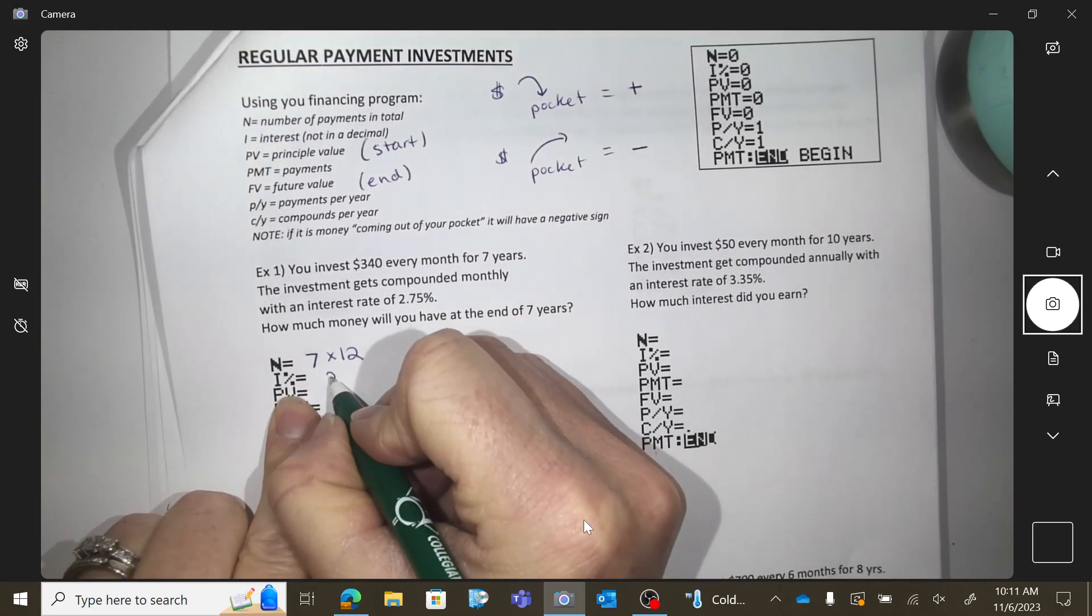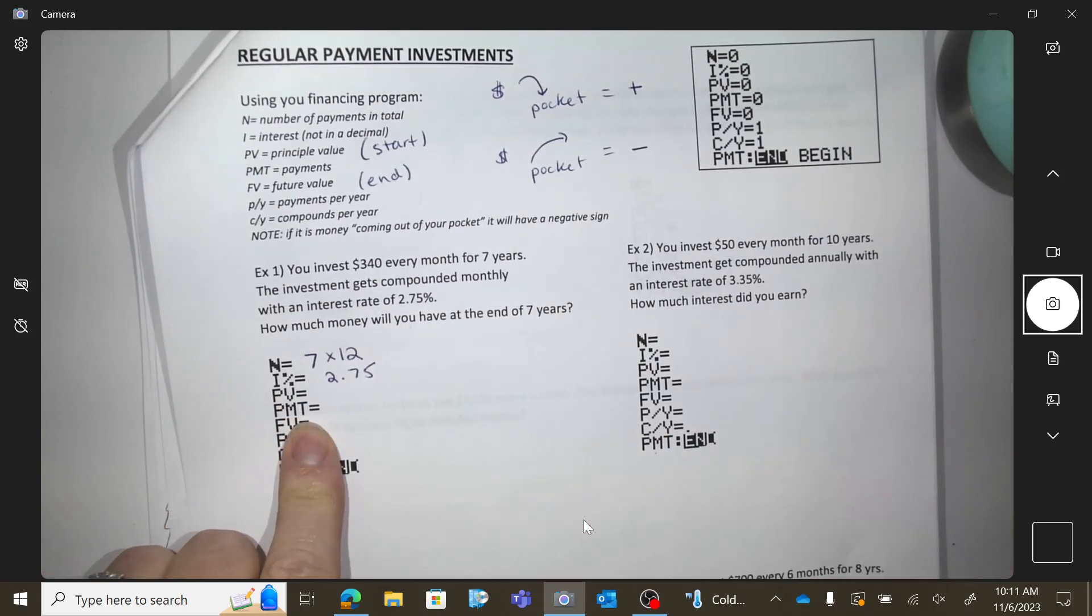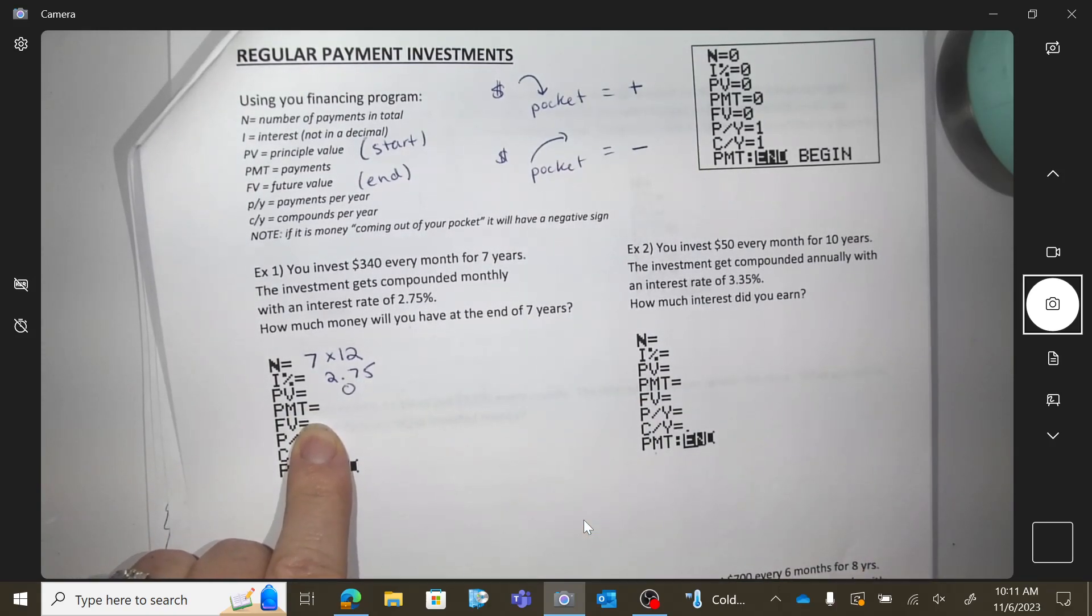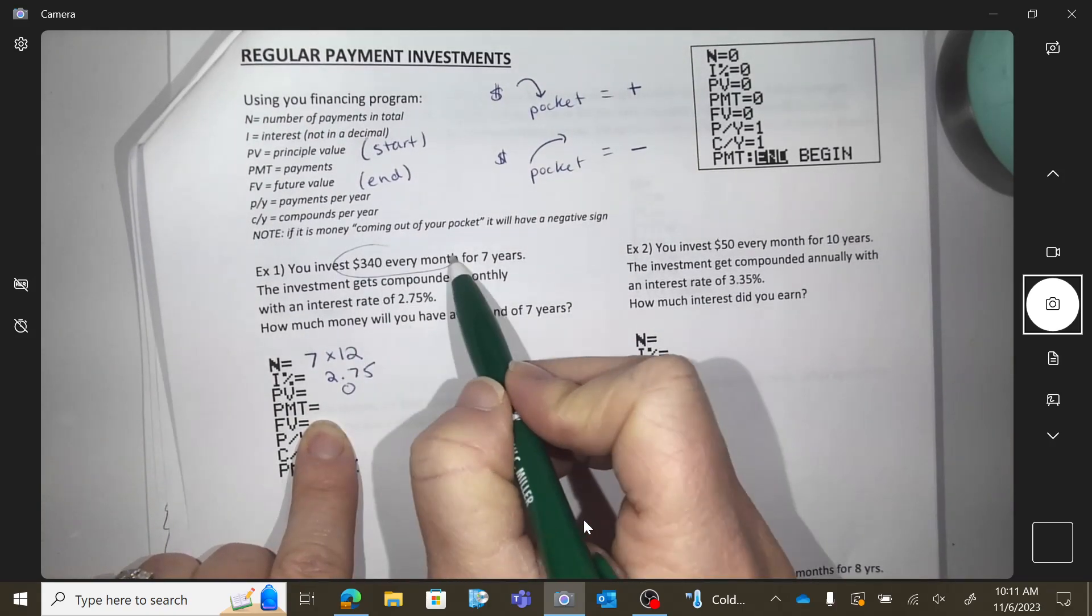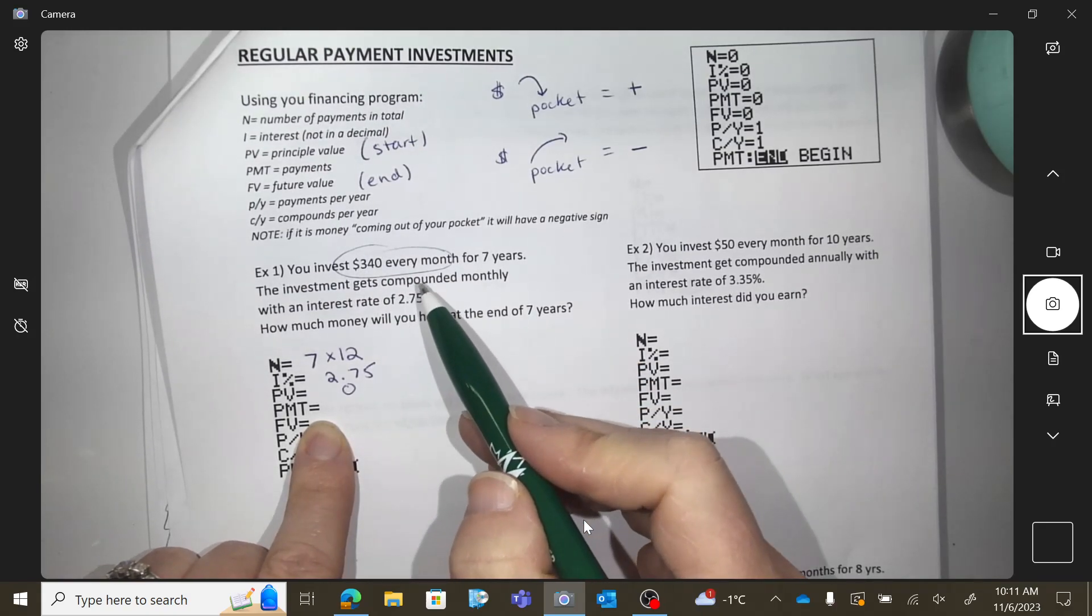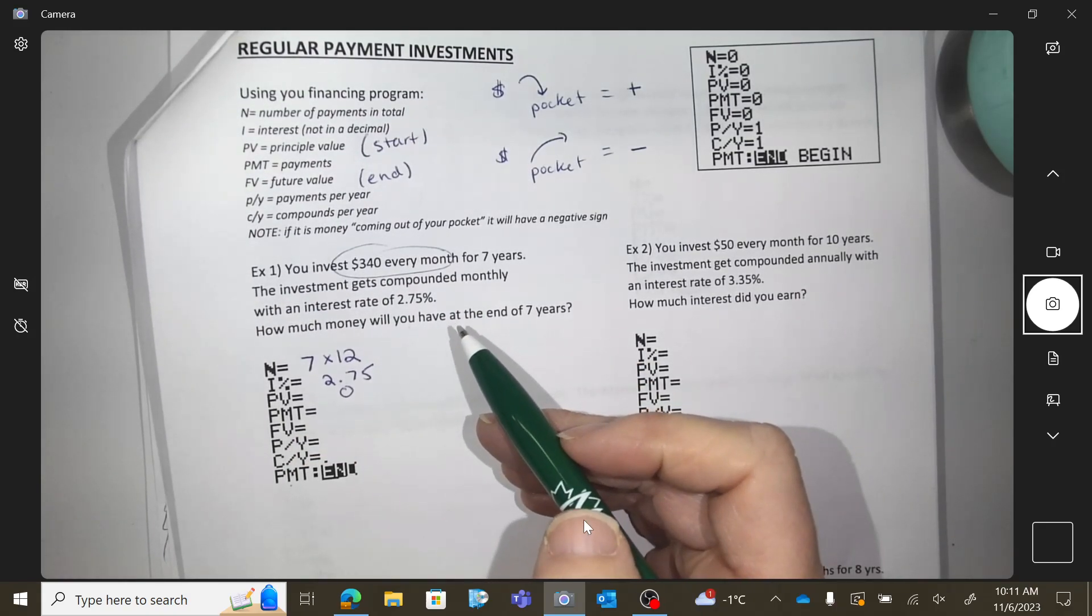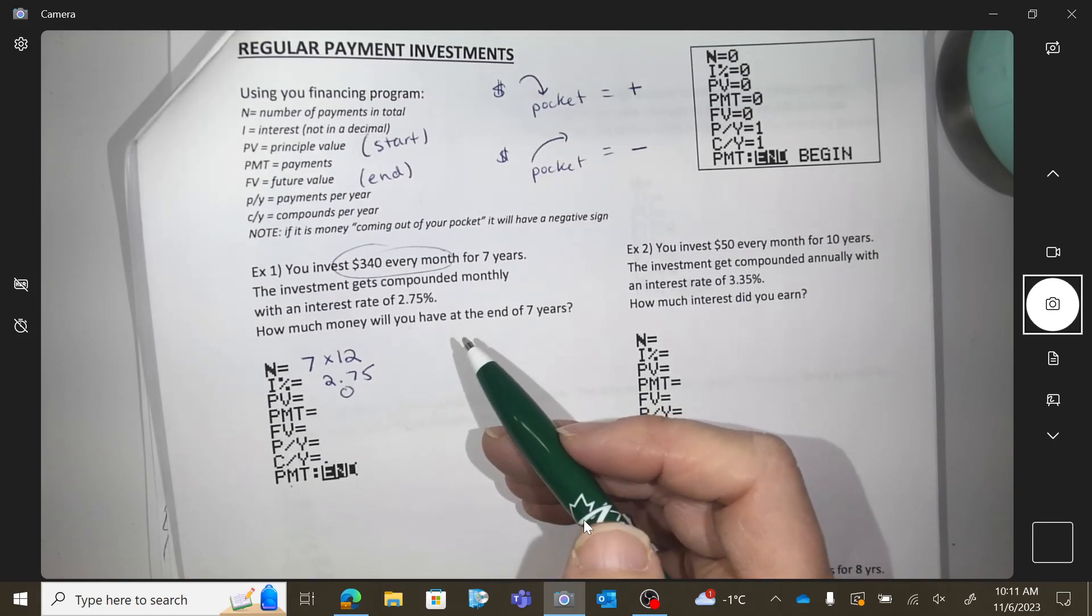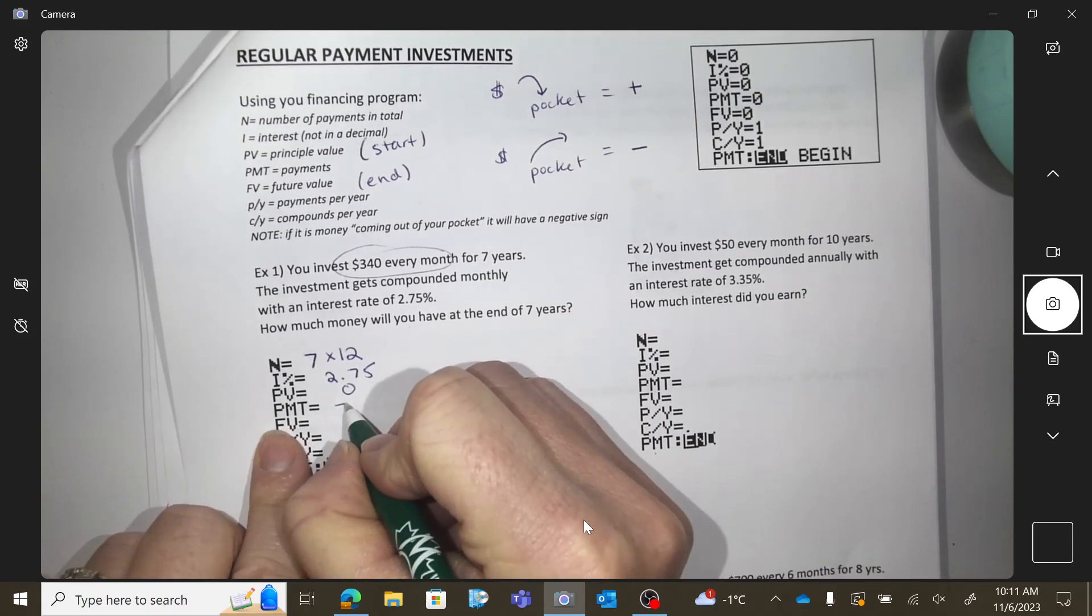I, 2.75, how much money did you start with? Previous value, what are you starting with in your bank account? You don't have anything. Payments, so you're making $340 a month, every month you're going to put that in as a payment. That's out of your pocket.